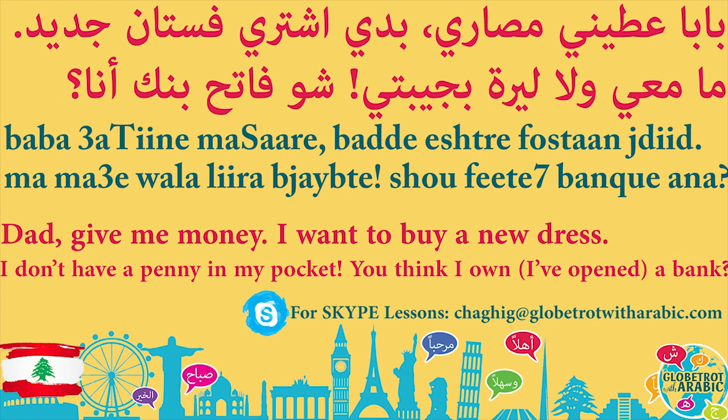Now let's repeat this in the feminine and masculine forms. Masculine: Baba, ateene masari. Baddi ishtri fustan jdeed. Ma ma'i wala liira b'jaybteh. Shoo faytih bank ana? Now, let's pretend the person is asking money from their mum. Mama, ateene masari. Baddi ishtri fustan jdeed. Ma ma'i wala liira b'jaybteh. Shoo faytha bank ana? The only thing that changes is faytih, which becomes faytha. That's it for today. See you tomorrow.